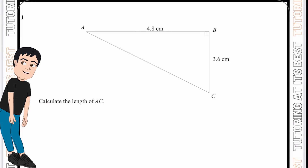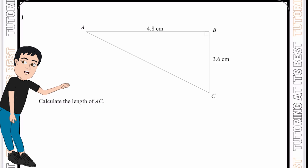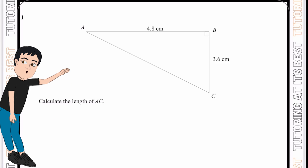Pythagoras' theorem states that for all right-angled triangles, the square on the hypotenuse is equal to the sum of the squares on the two sides. The hypotenuse is the longest side of a right-angled triangle, which is opposite the right angle. So this is our right angle, and opposite it is our hypotenuse. The hypotenuse equals the sum of the squares of the other two sides, so 4.8 squared plus 3.6 squared gives us the hypotenuse.